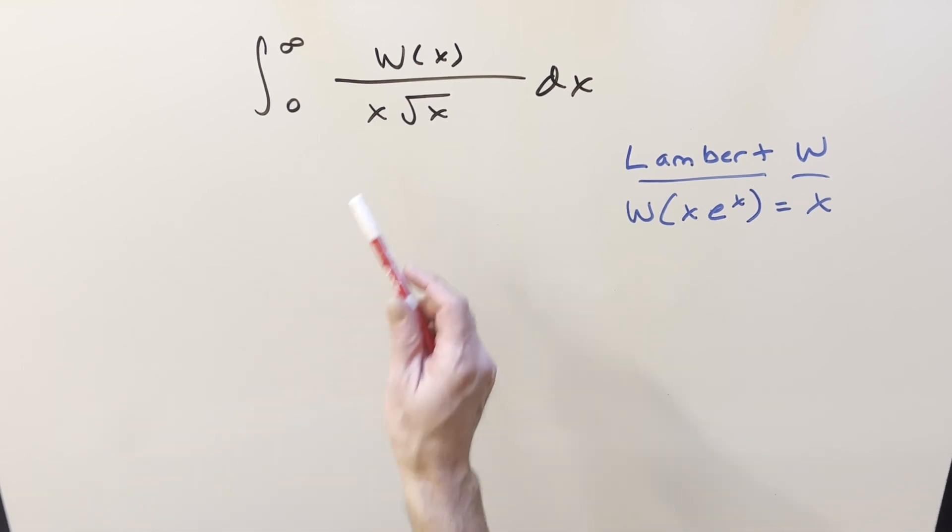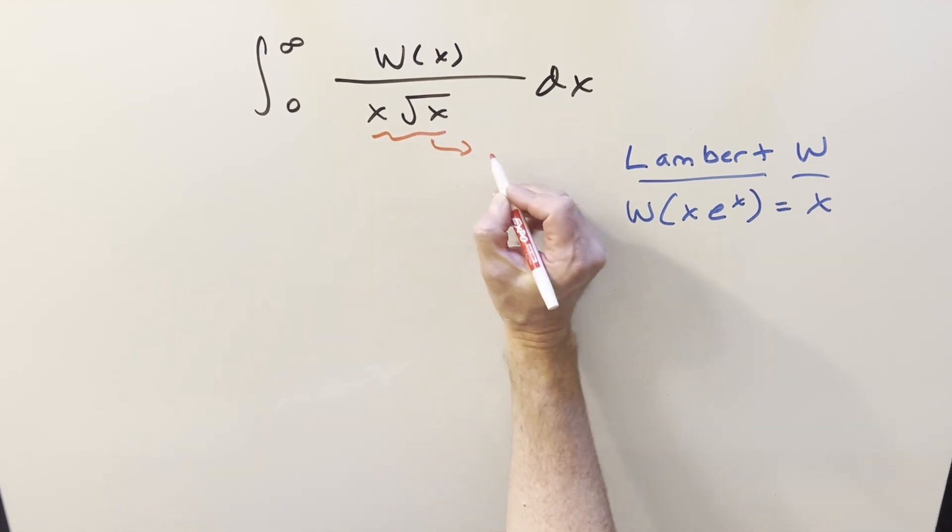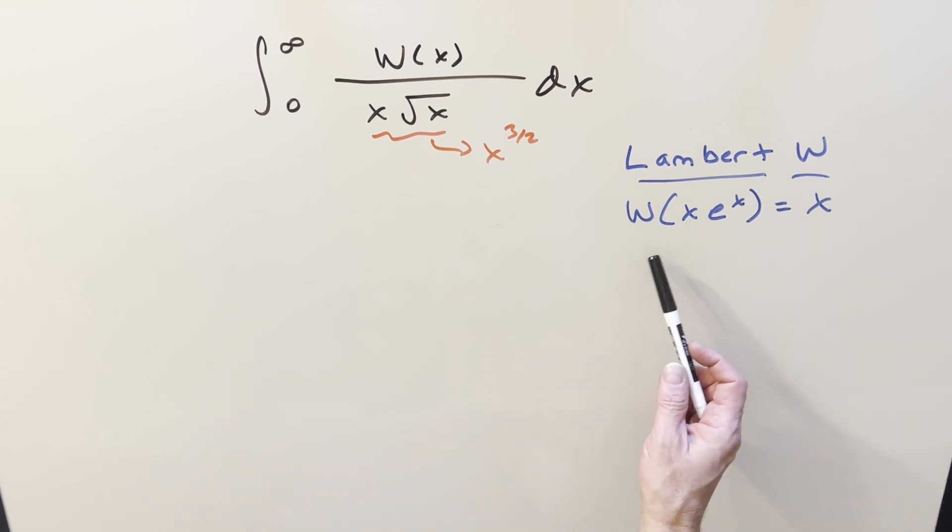I know I did an integral before where we just integrated the Lambert W function alone, but here we've got the Lambert W function and x square root of x. I'm not going to get too into the Lambert W function as I've went over a lot of the details of that in other videos, so I'll provide a link in the description to the playlist and the introduction video on Lambert W.